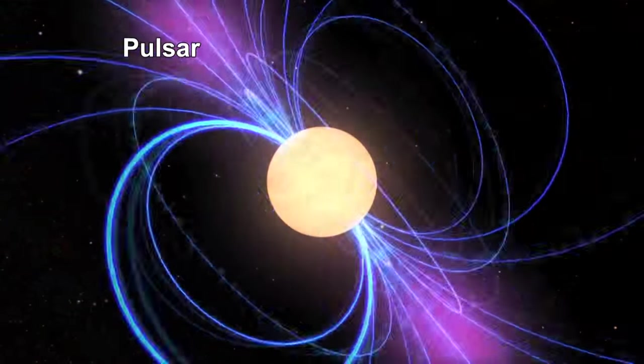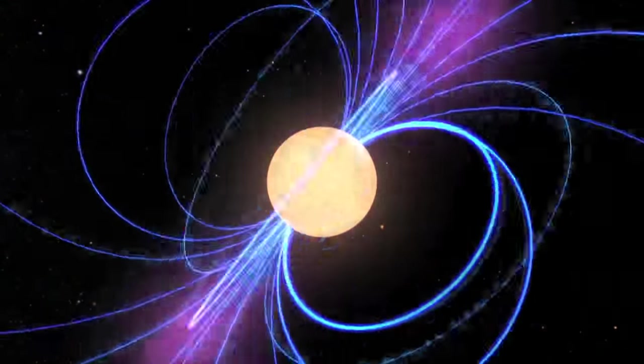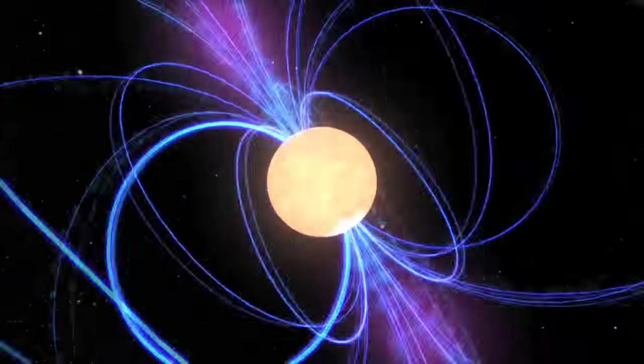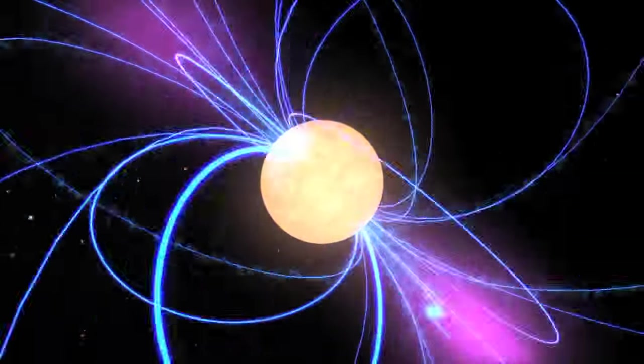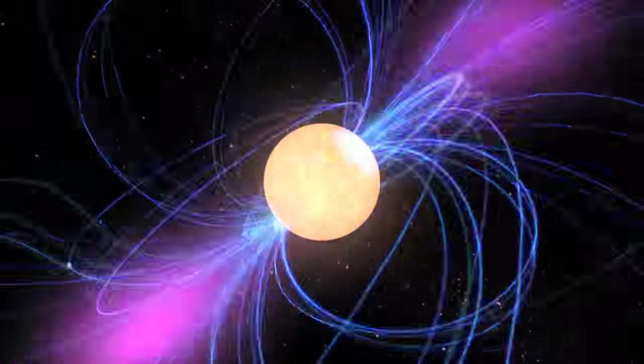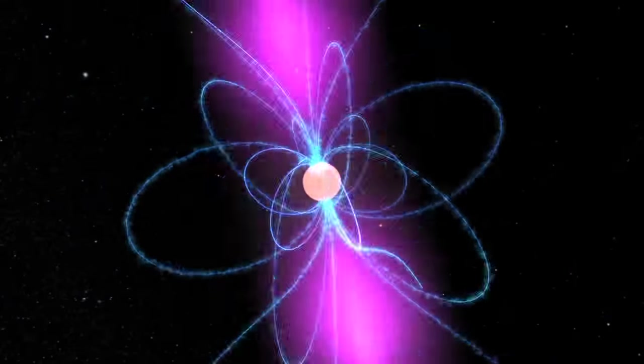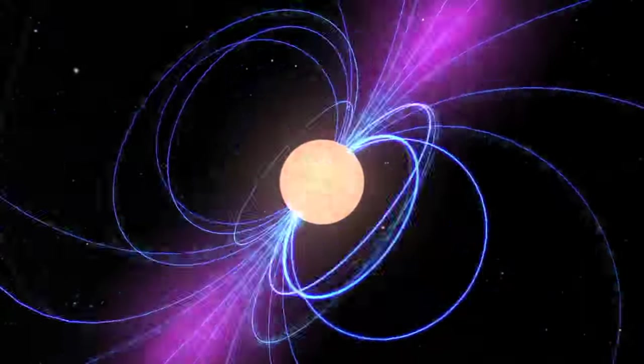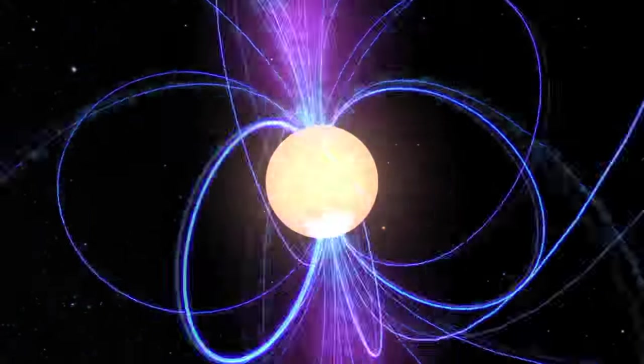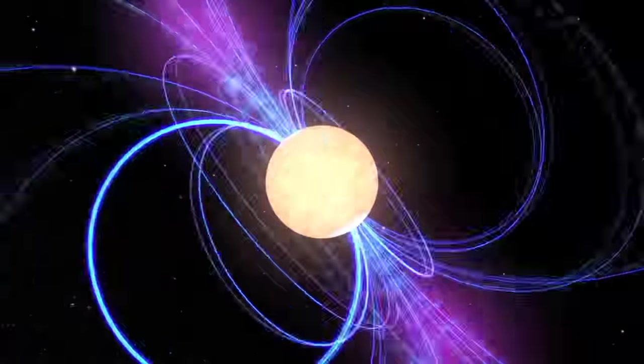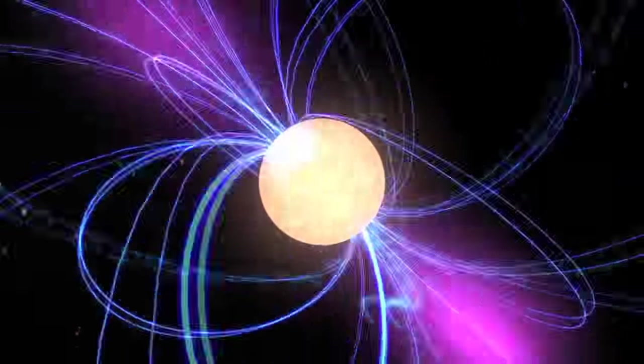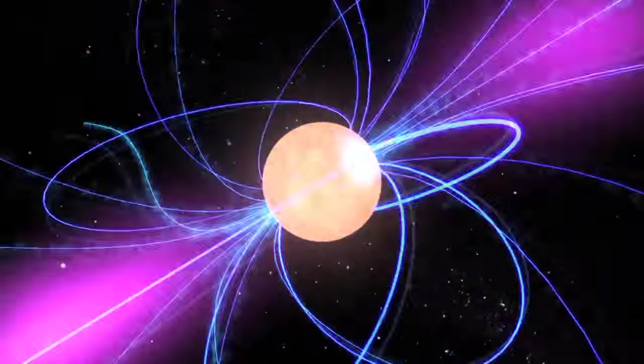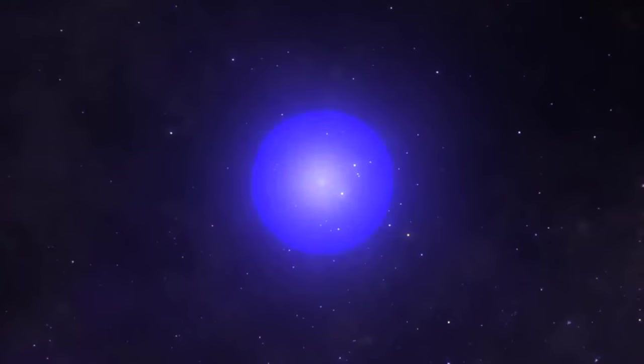You'll recall from the globular clusters and supernova chapter in the How Far Away Is It video book that a pulsar is a rapidly rotating neutron star with a powerful magnetic field. The result is a sort of magnetic lighthouse which, if aligned correctly, flashes in our direction twice each cycle. These signals are highly regular. In fact, pulsars are some of the best clocks in nature and this allows extremely precise measurements of their motion.